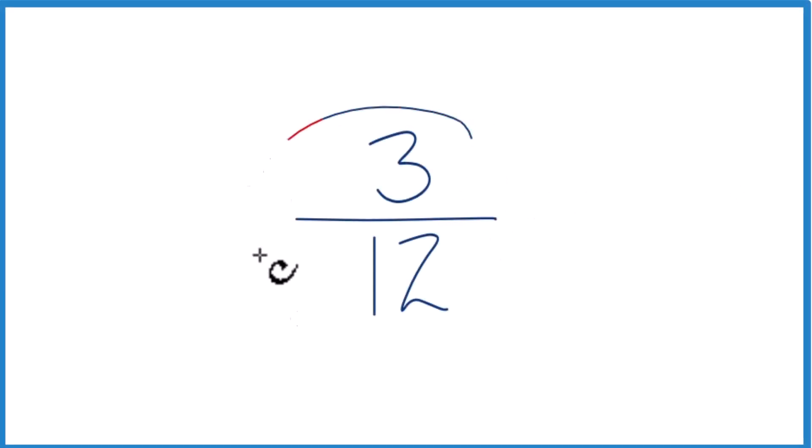If you need to write the fraction 3 twelfths as a decimal, here's how you do it. We know that 3 is smaller than 12, so when we divide 3 by 12, we should get a number that's less than 1. That'll be our decimal.